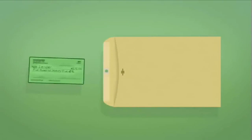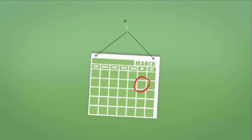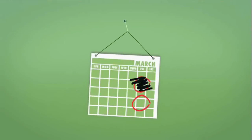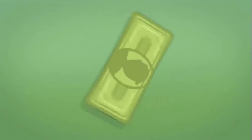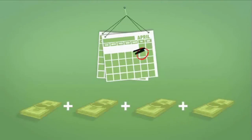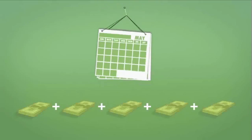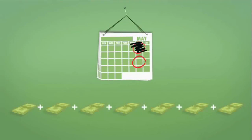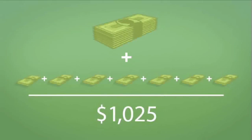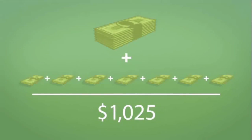John didn't have the money in his account right then, but it didn't matter — the lender would hold the check for two weeks until the loan was due. After two weeks, John didn't have enough money to pay back the loan, so he paid the lender $75 more to roll over his loan, getting two more weeks to repay. Two weeks later, the same thing happened — John paid another $75. It took John 12 weeks, that's three months, to save enough money to repay the original $500 loan. In the end, John paid $1,025 when he only needed $500. That was a really expensive loan.